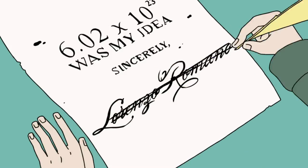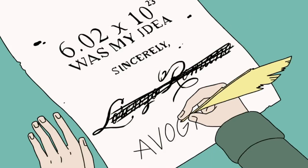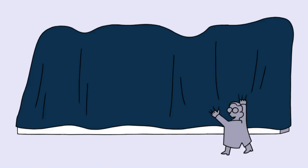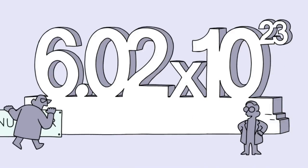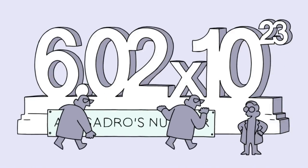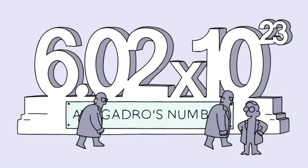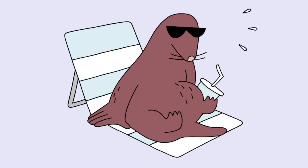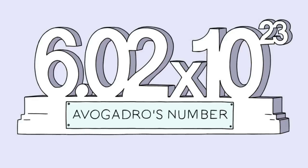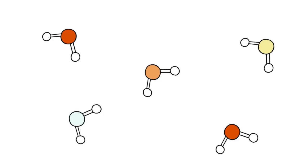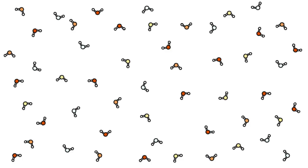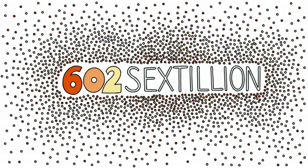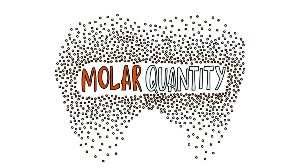Since Avogadro was the first one to come up with this idea, scientists named the number 6.02 times 10 to the 23rd after him. It is simply known as Avogadro's number. Now, back to the mole. This number has a second name: the mole. Chemists use the term mole to refer to quantities that are at the magnitude of 602 sextillion. This is known as a molar quantity.